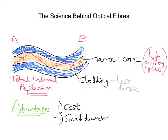One of the key advantages of optical fibres over copper wires relates to the level of interference. Electrical signals in copper wires interfere with other copper wires bundled in the same cable. As optical fibres carry light signals, however, there is no interference between the fibres bundled in the same cable, so any signal that you do get is much clearer.